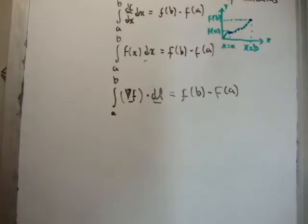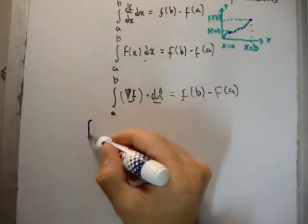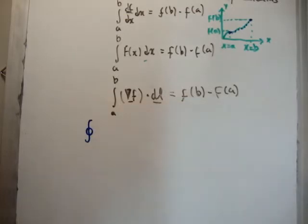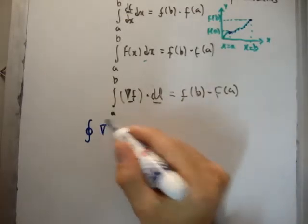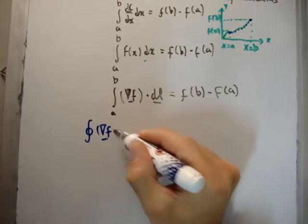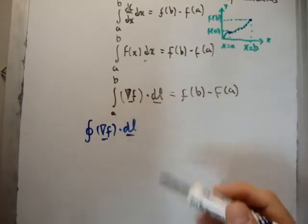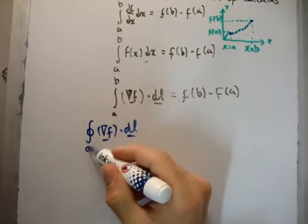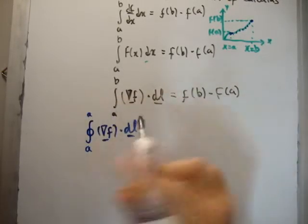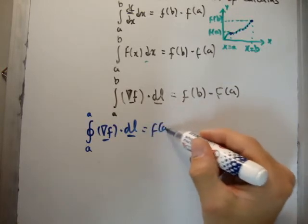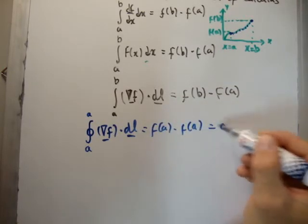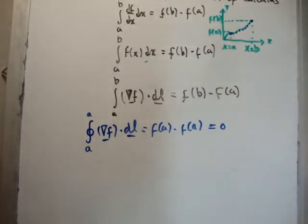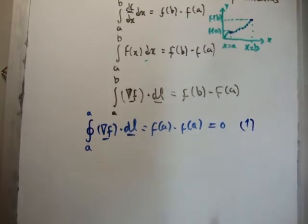Alright? Now, we have two corollaries. The first one is this. If you do a closed-line integral of our function, let's say f, which is a vector, dot dl, that means, because it's a closed-line integral, it starts at a, but it also ends at a. That means it's going to be f at a minus f at a, which is equal to zero. So the closed-line integral is going to be equal to zero, because the beginning and end points are the same. So that is the first corollary, and that's very important. We will be using that more than once.